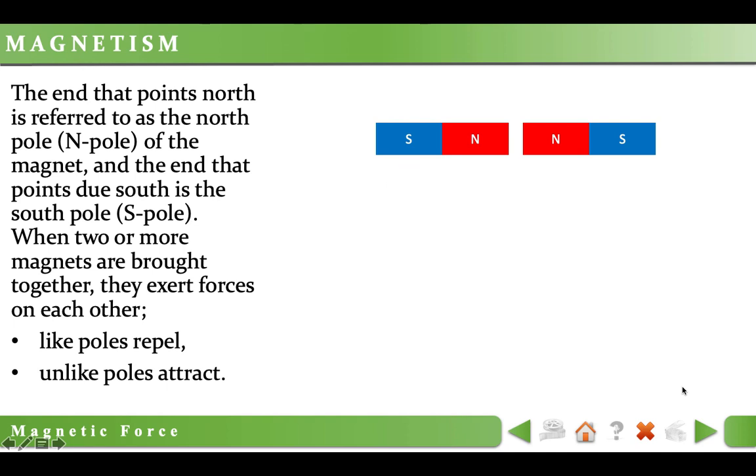When two or more magnets are brought together, they exert forces on each other. Like poles repel each other. For example, on this figure we have two north poles coming together, so these two magnets will repel each other.